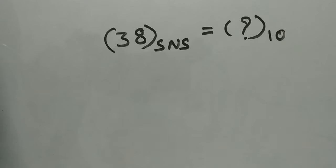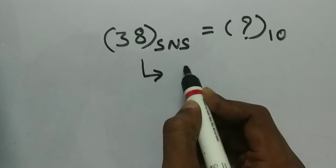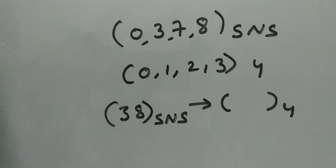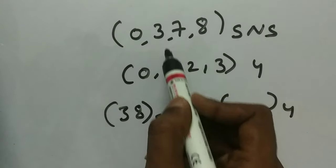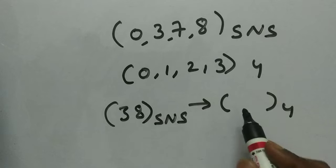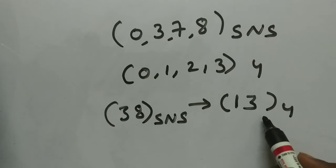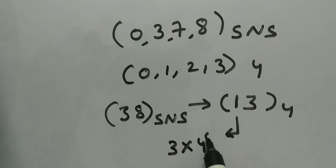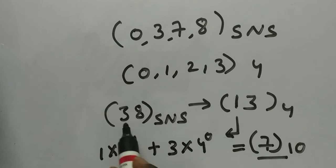Now let's take another example — converting from SNS to base 10. We go from SNS to base 4 (the known system), then to base 10. So for 38 in SNS: 3 represents 1 in base 4, and 8 represents 3 in base 4. So 38 SNS equals 13 in base 4. Converting to base 10: 3 × 4⁰ + 1 × 4¹ = 3 + 4 = 7. So 7 in base 10 equals 38 in SNS.